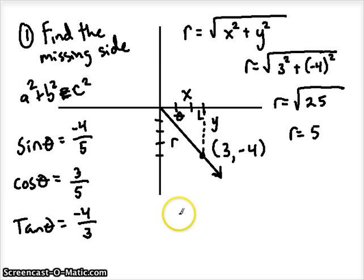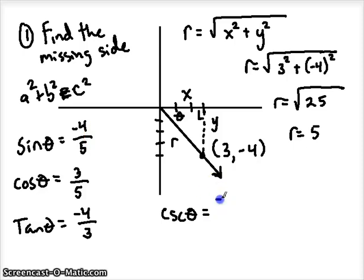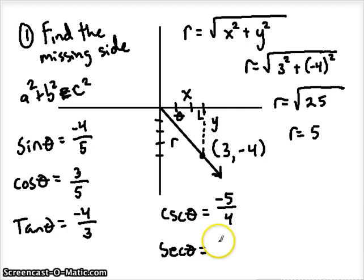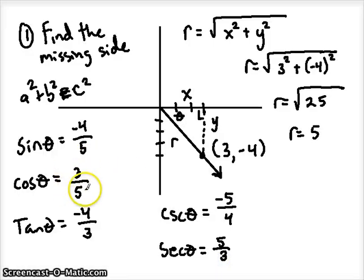Let's do the reciprocal functions now. We'll do the cosecant. Just flip this sine ratio. So now we have negative 5 fourths. Just keep that negative on top or in front. The secant is going to be 5 over 3. Just flip that cosine. And the cotangent is going to be reciprocal of tangent, so negative 3 over 4.